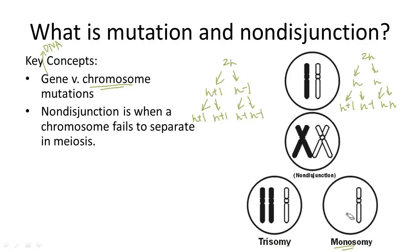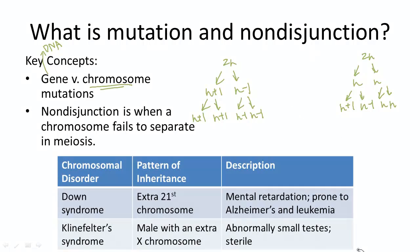There are a couple of examples of what happens when non-disjunction results in a chromosome mutation. The two most common are Down syndrome and Klinefelter syndrome, and they're both examples of trisomy because they both have an extra chromosome. Down syndrome is caused by an extra 21st chromosome; Klinefelter is caused by an extra X chromosome within a male genome. Both are really serious disorders: Down syndrome involves intellectual disability and increased susceptibility to Alzheimer's and leukemia, while in Klinefelter syndrome, males have abnormally small testes and can be born sterile.